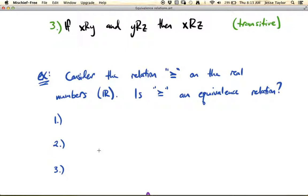Let's consider the greater than or equal to relation on the real numbers. So this blackboard R is how you denote the real numbers. Is greater than or equal to an equivalence relation? So is it true that for any real number X, that X is greater than or equal to X? Is that always true? Yes, it is. X is equal to X, so certainly X is greater than or equal to X.